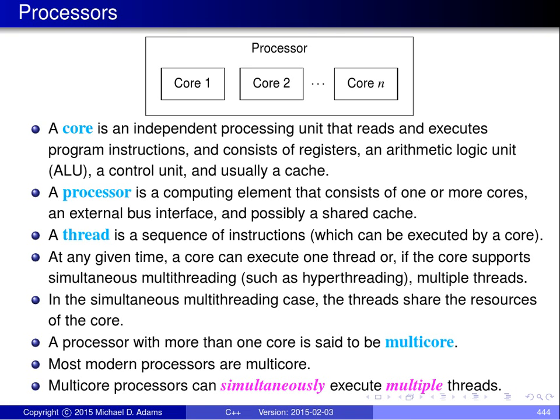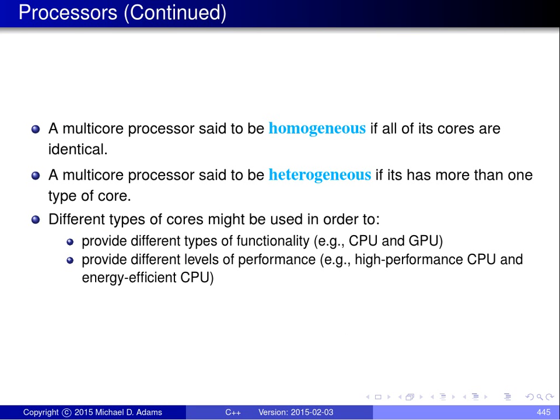Most processors these days tend to have multiple cores — more than one core — and we say such processors are multicore. Multicore processors are important because they can simultaneously execute multiple threads. They're very well suited to concurrent programming because they can do more than one thing at the same time, which gives you thread-level parallelism.